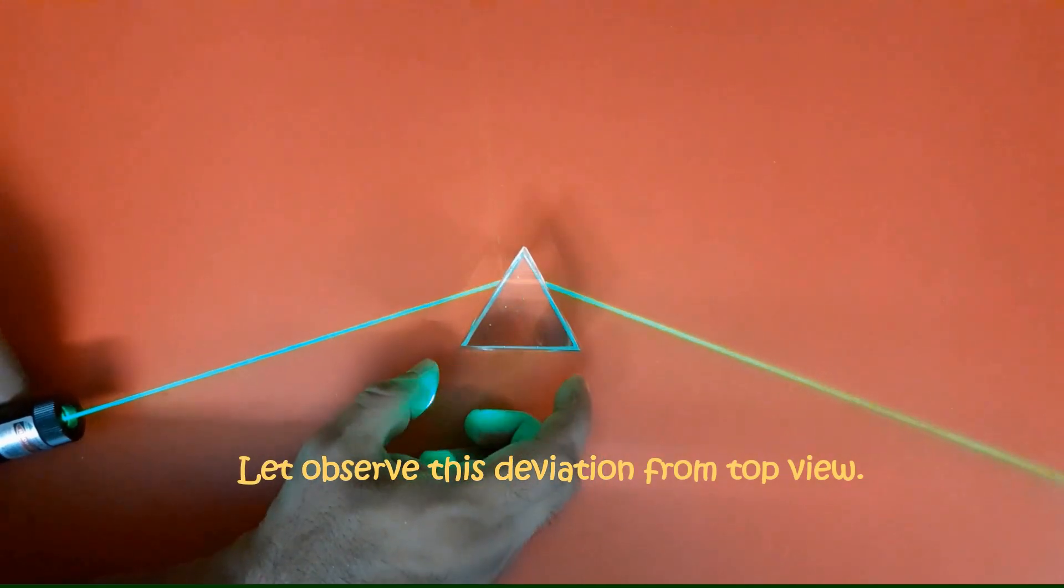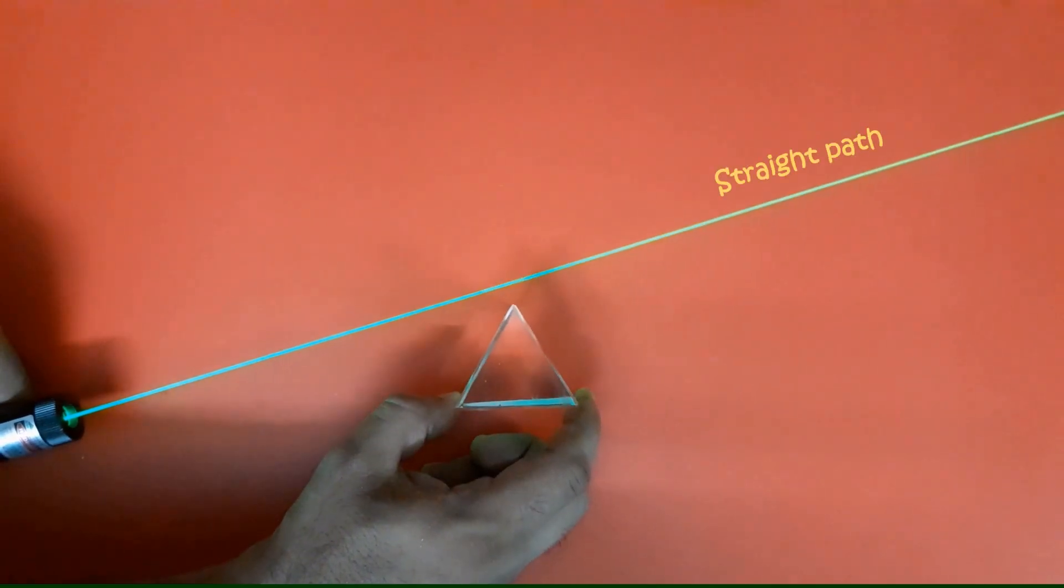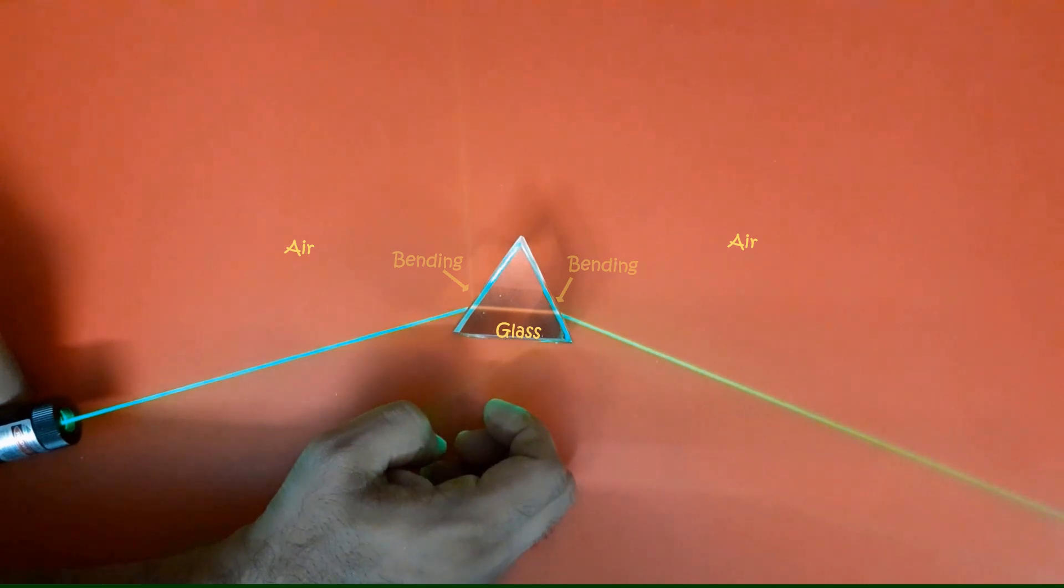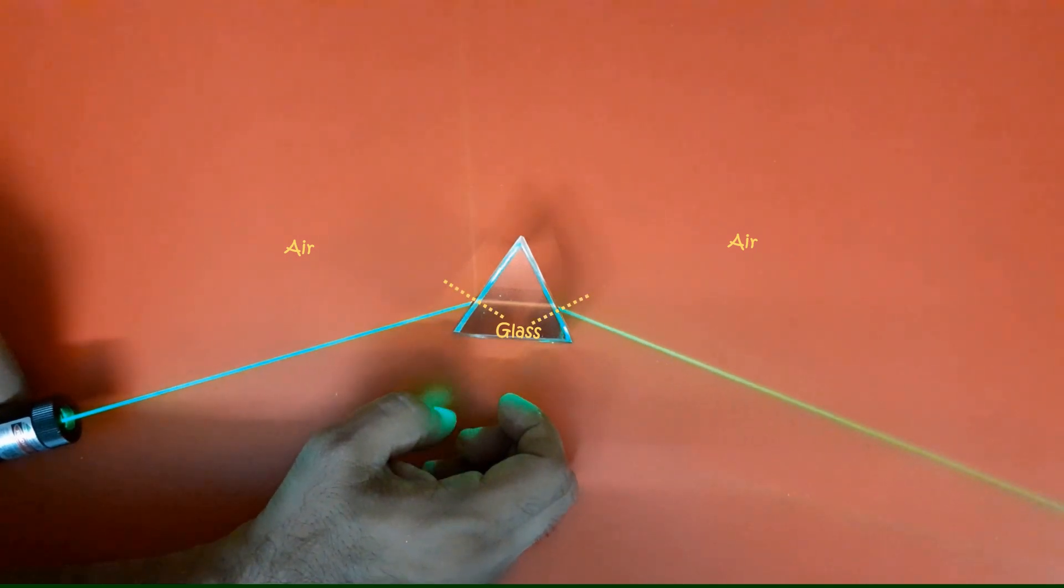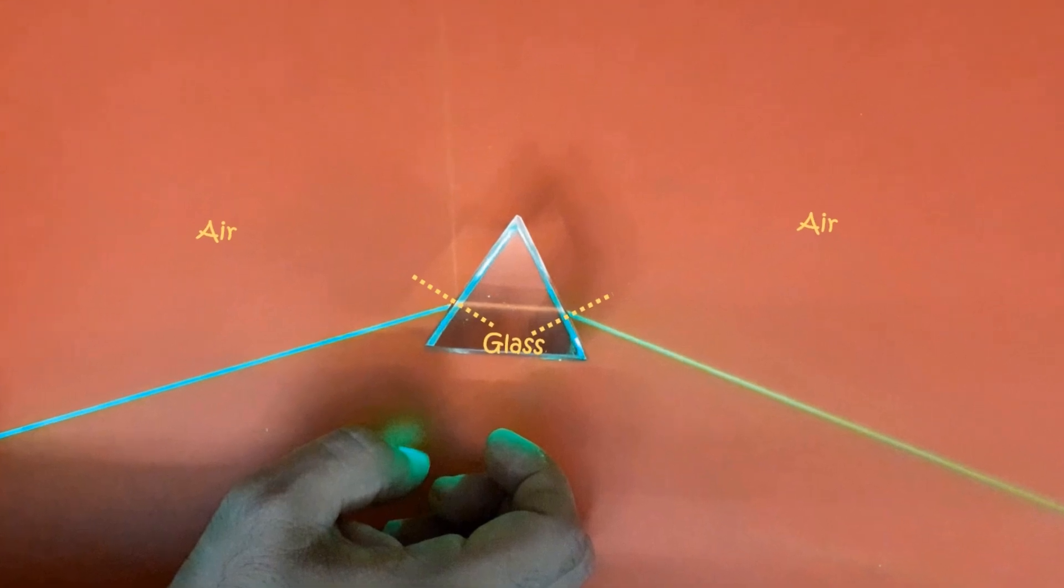Let's observe the behavior of laser beam from the top view. In this view you can clearly see laser light enter the air to glass medium. As glass is optically denser than air, the light bends towards the normal.